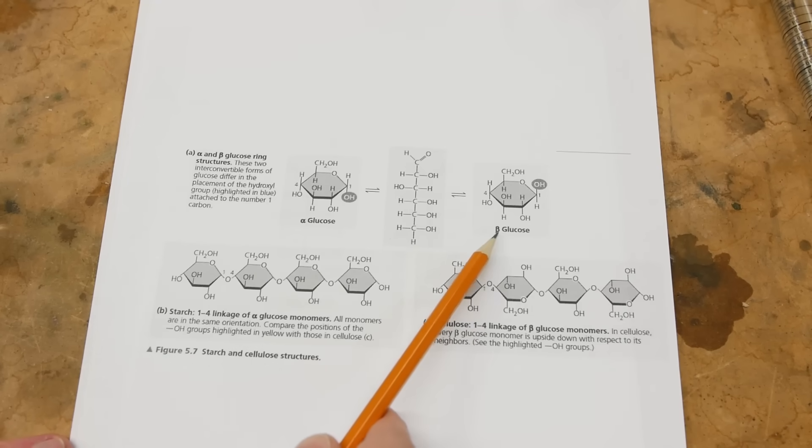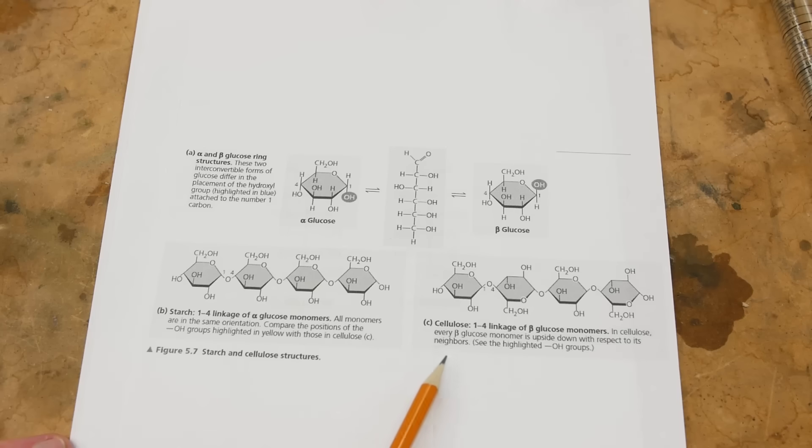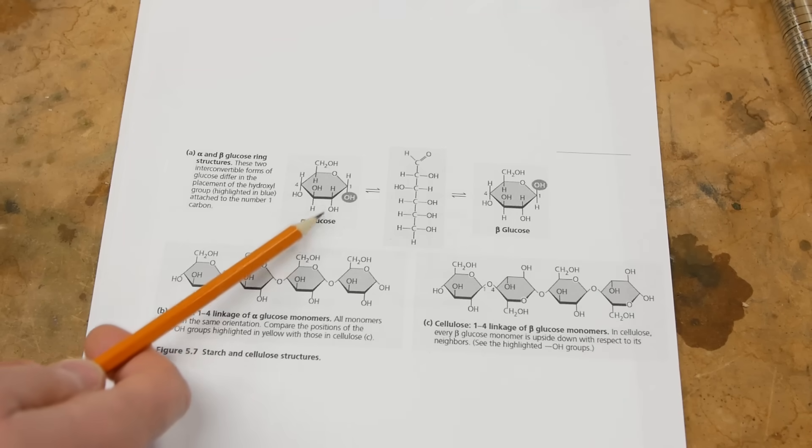So for example, if you link up beta glucose over and over again, you end up with cellulose. And if you link up alpha glucose over and over, you end up with starch. And these are dramatically different in terms of diet. Obviously we can eat starch and get calories out of it, but we do not have enzymes to process cellulose and get calories out of that. Even though it's the same glucose, it's just this one flip of the OH group that changes all of these properties.